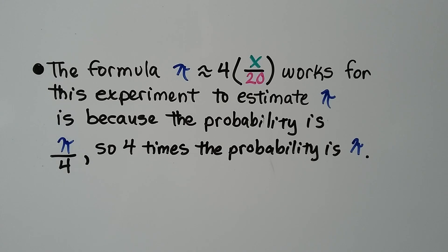And the formula, pi is approximately four times the quotient of x and twenty, works for this experiment to estimate pi because the probability is the quotient of pi and four. So four times the probability is pi.